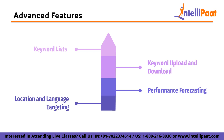Next is location and language targeting. Keyword Planner allows you to target keywords by location and language, which can help you reach your target audience more effectively. You can also get data on how frequently specific keywords are searched in different locations and languages. Finally, historical data. Keyword Planner provides historical data on keyword search volume trends, which can help you identify seasonal trends and optimize your campaigns accordingly. You can also see how keyword search volume has changed over time to make informed decisions about which keywords to target.